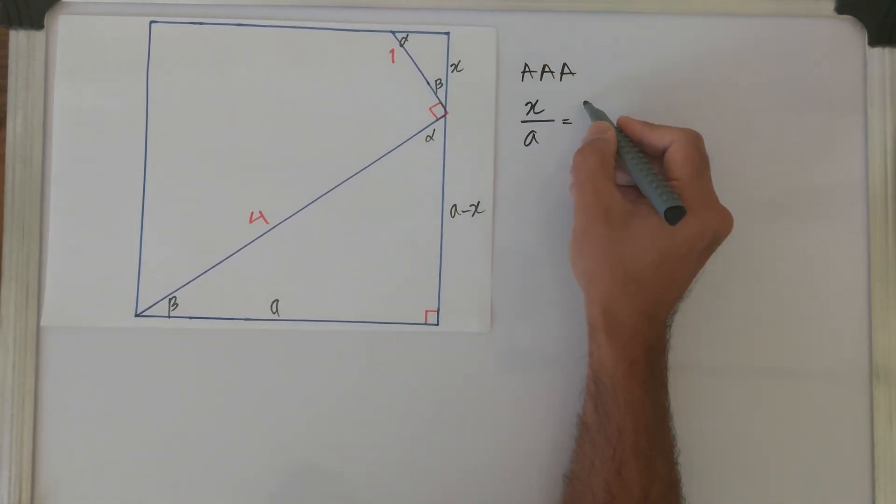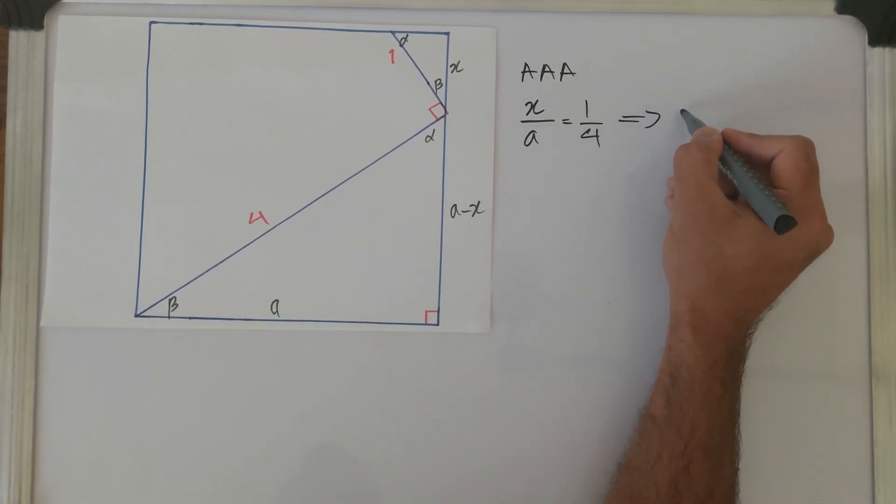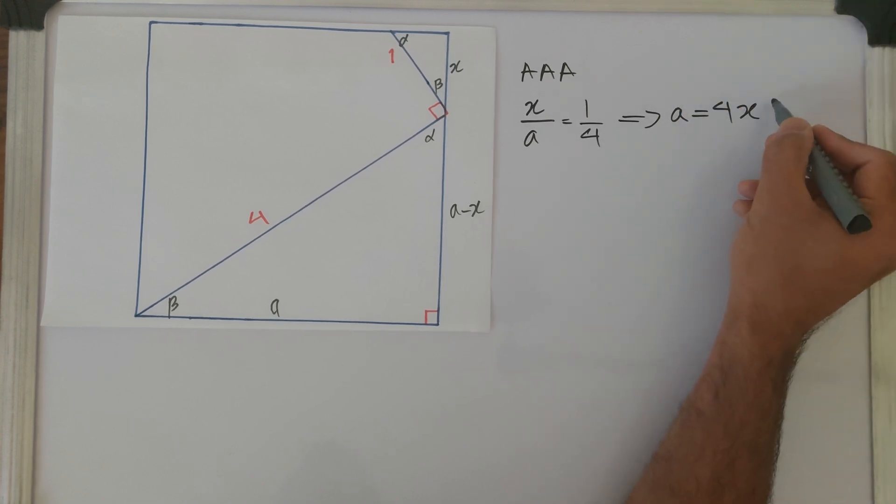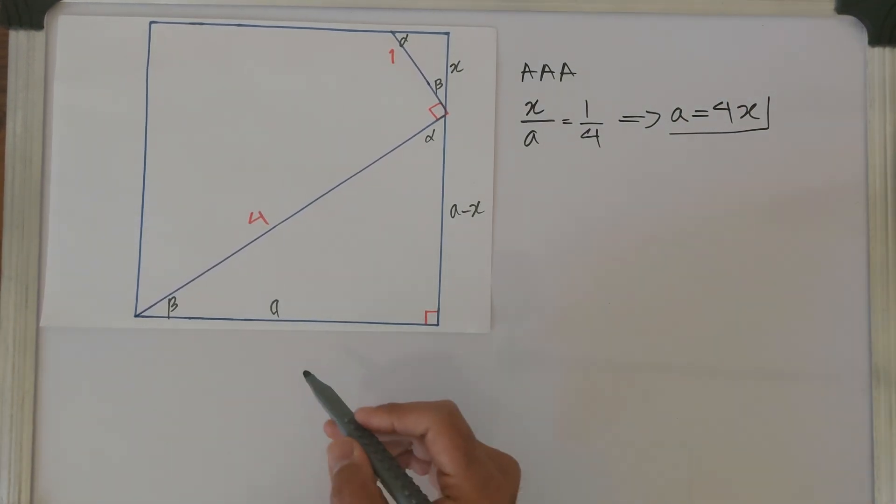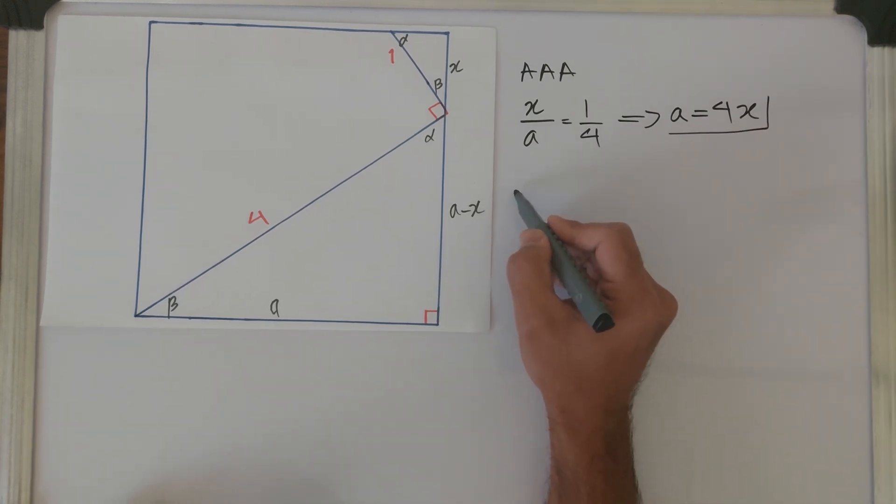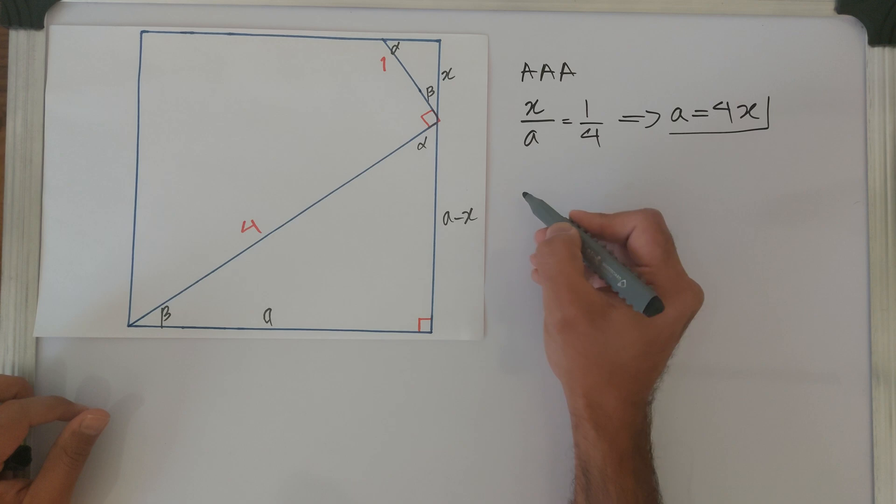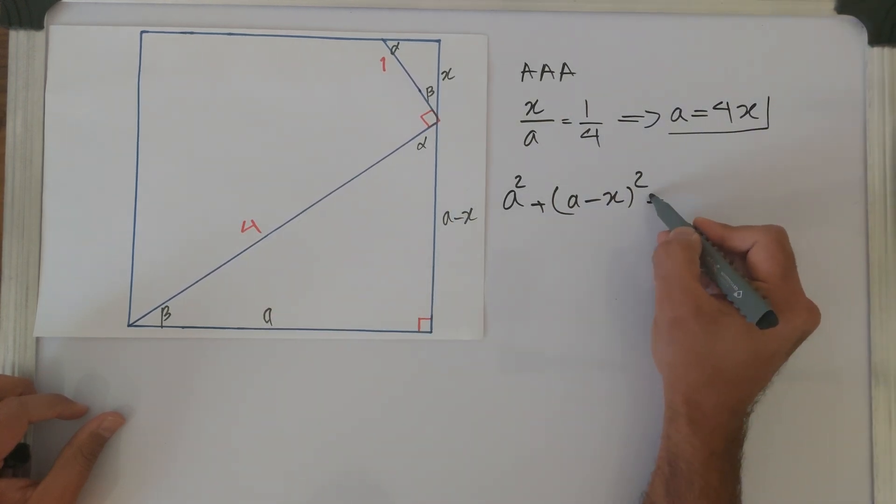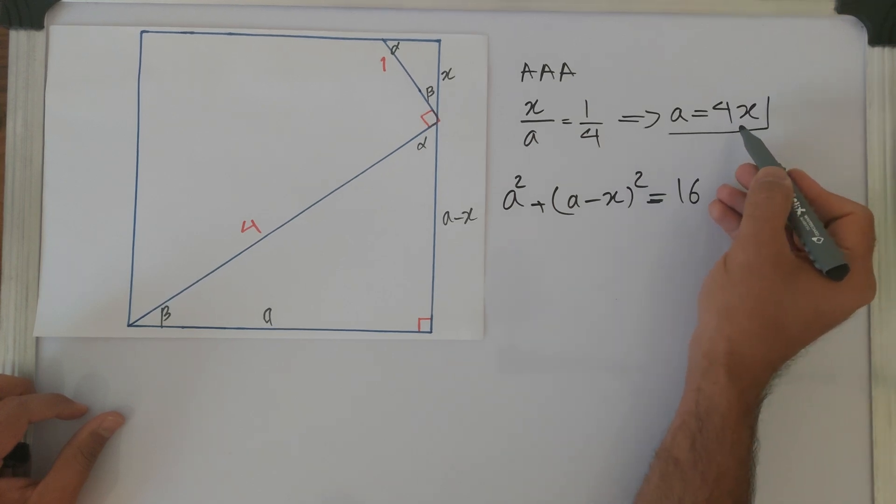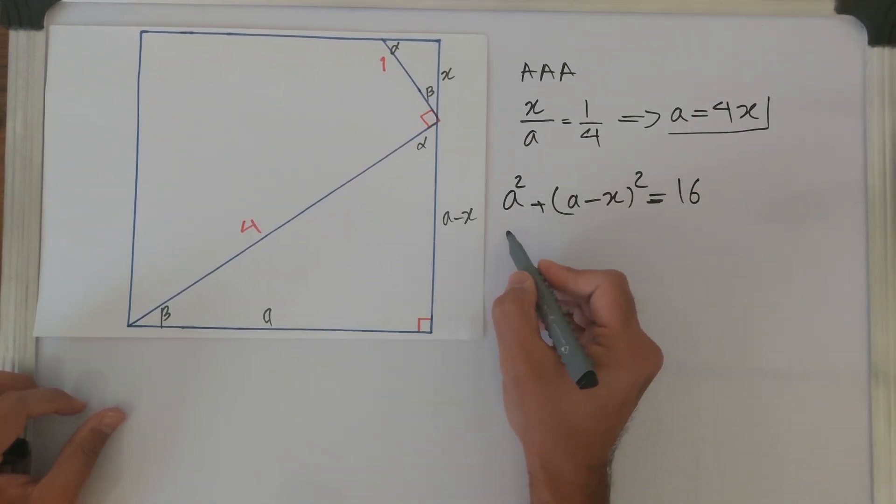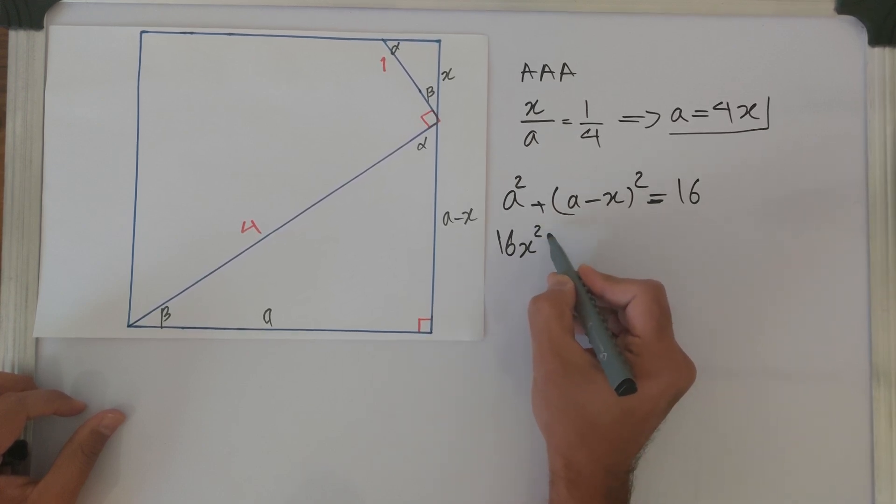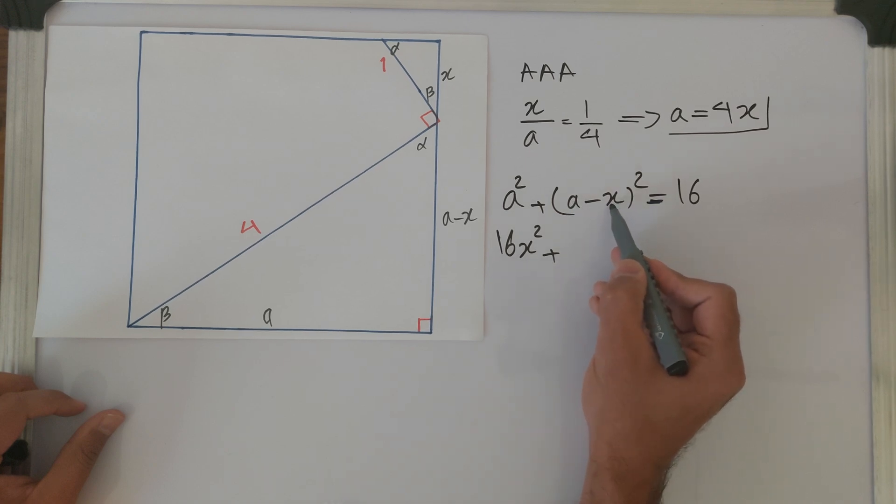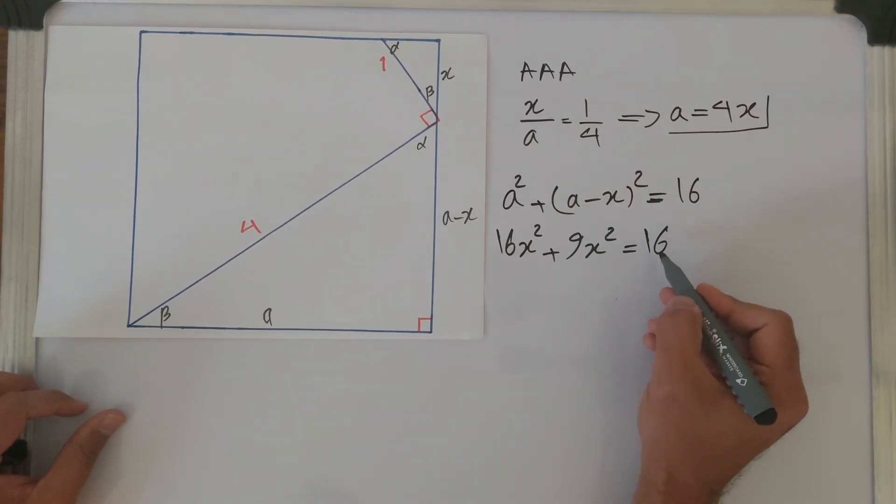one over four. It means a equals four x. So that's maybe our first relationship that we found. Based on this second big triangle, let's write down the Pythagorean theorem now. We know that based on the Pythagorean theorem, a squared, this side squared, plus this side squared, which is a minus x squared, equals hypotenuse squared, which is 16. We know that a is 4x, right? So let's just replace it now. So 4x squared is 16x squared plus a is 4x, so 4x minus x is 3x, the whole thing squared is 9x squared equals 16.